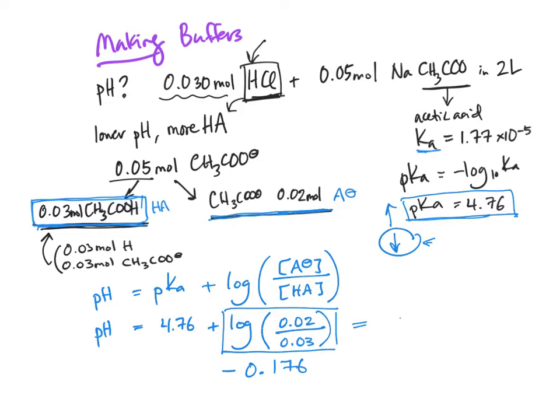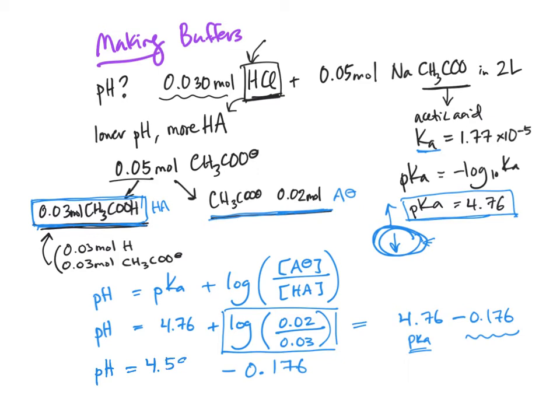So this makes sense. I'm going to rewrite it over here. We've got 4.76, which is our pKa, minus 0.176. We're lowering the pH from the pKa. So the pH we're going to be at is lower than our pKa. Completing the math here, the pH will be equal to 4.58 when we've combined together the HCl and the sodium acetate.